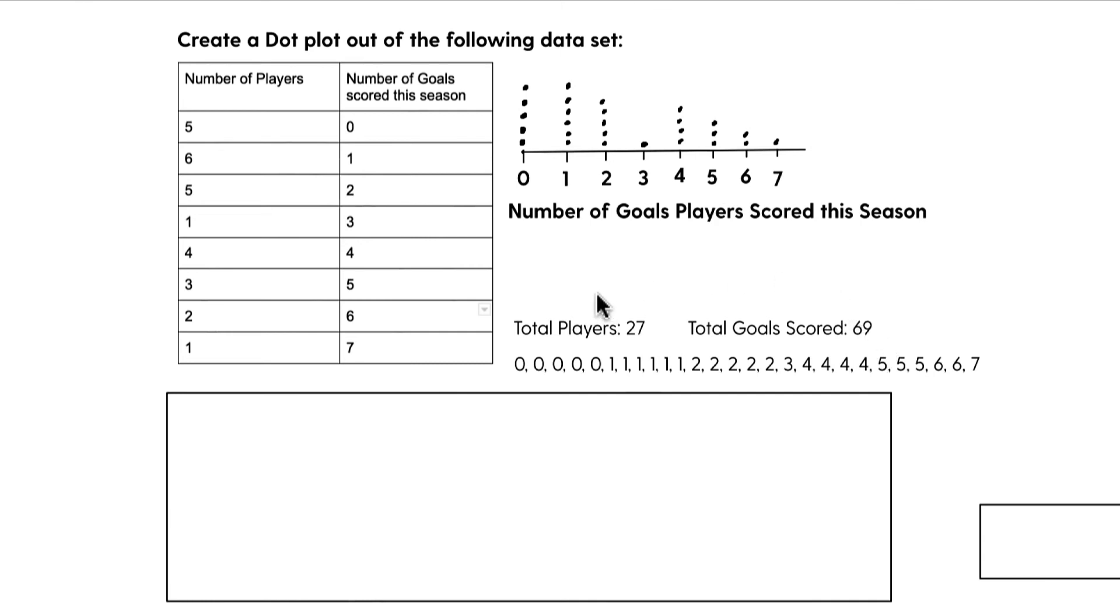What about the number of goals scored? Well, you would have to effectively kind of multiply these out and then add them in a way. Or you could do what I've done here, which is write them all out and add them. But you could do five times zero up here, and that means zero, right? Six times one, we have six goals here. Five, if five players had two, then that's they represent 10 goals here. One player had three, four players had four, that represents 16, and so on. Until you add them all up, you get 69.